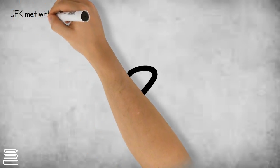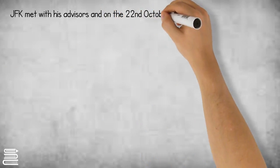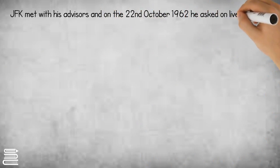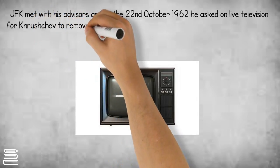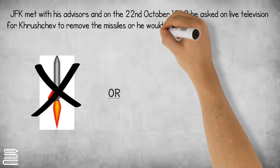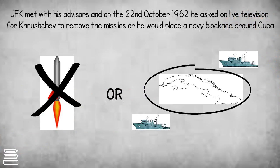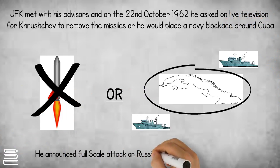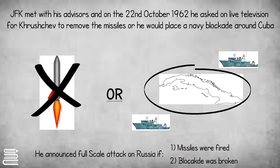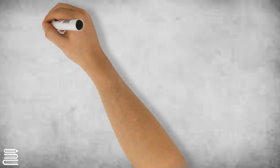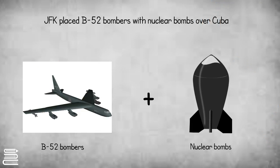JFK was unsure what to do and so he met with his advisers. On 22 October 1962, JFK asked on live television for Khrushchev to remove the missiles, or he would place a navy blockade around Cuba. He announced a full-scale attack on Russia if missiles were fired or if they tried to break through the blockade. He placed B-52 bombers armed with nuclear bombs above Cuba.